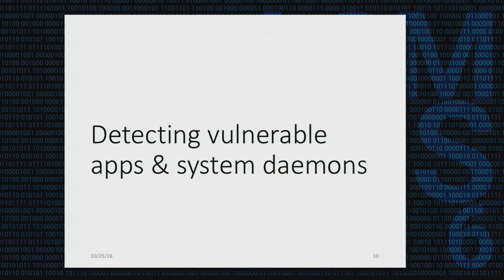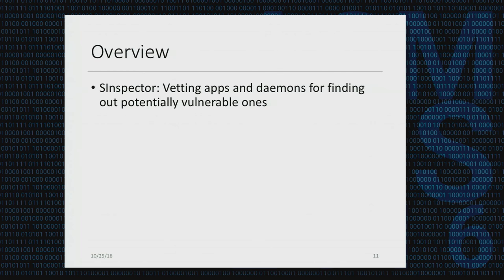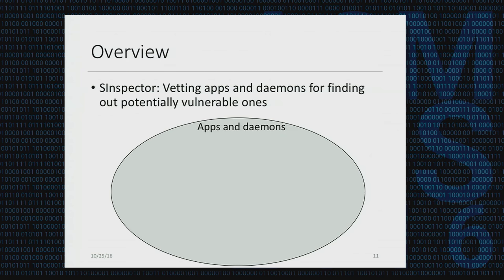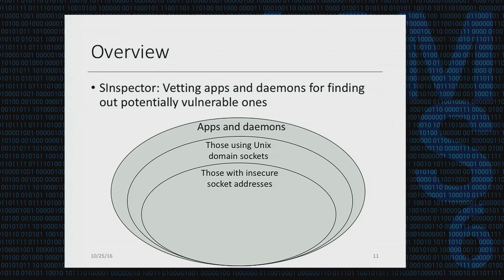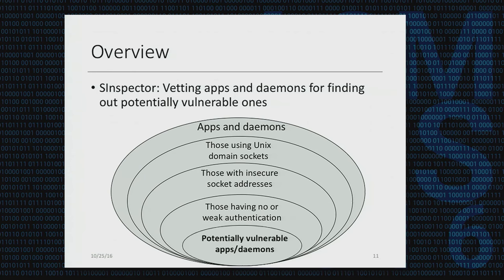I'm going to talk about our approach to detecting problematic apps and system daemons that involve misuse of Unix domain sockets. The tool we developed is called UDS Inspector. It's able to vet apps and system daemons to find those that are potentially vulnerable. The general idea is: given a set of apps and daemons, we gradually exclude those that are non-vulnerable. We first find out which ones are using Unix domain sockets, then pick out those having insecure socket addresses. Next we look at authentication checks, focusing on those having weak or no authentication. Finally, we examine reachability of vulnerable code to get a list of potentially vulnerable apps and daemons.